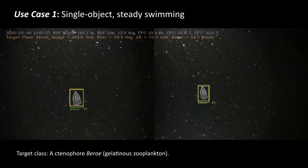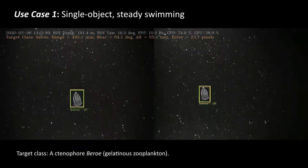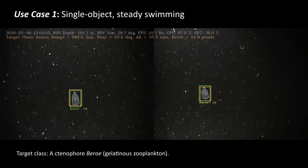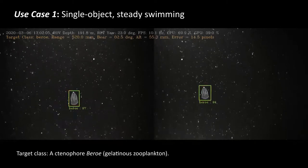For use case one, a single object that is steadily swimming, the target class here is a ctenophore called Boroei, which is a common translucent gelatinous animal.